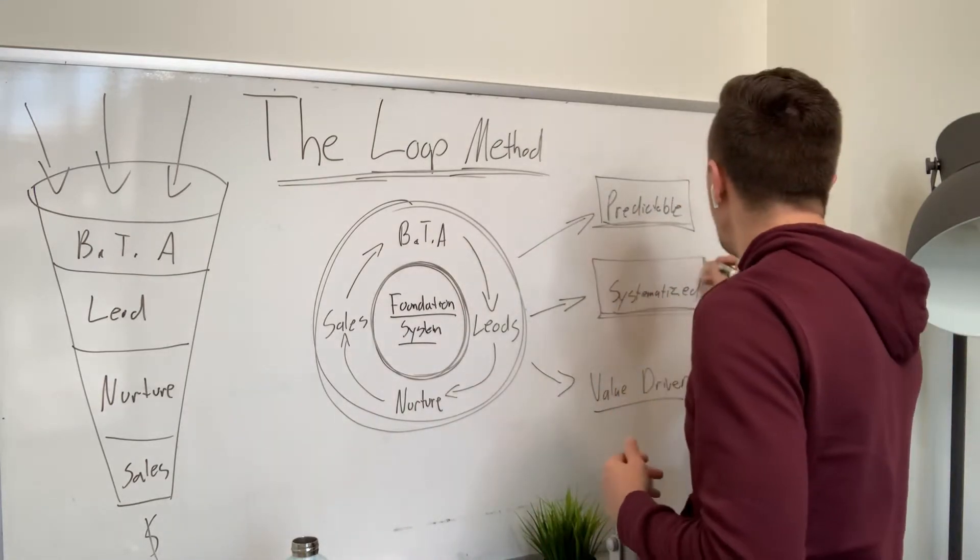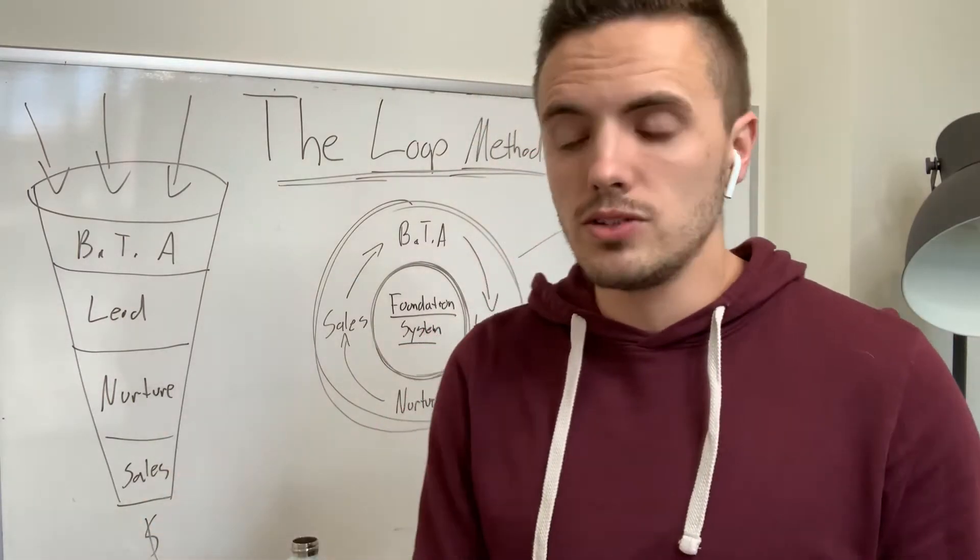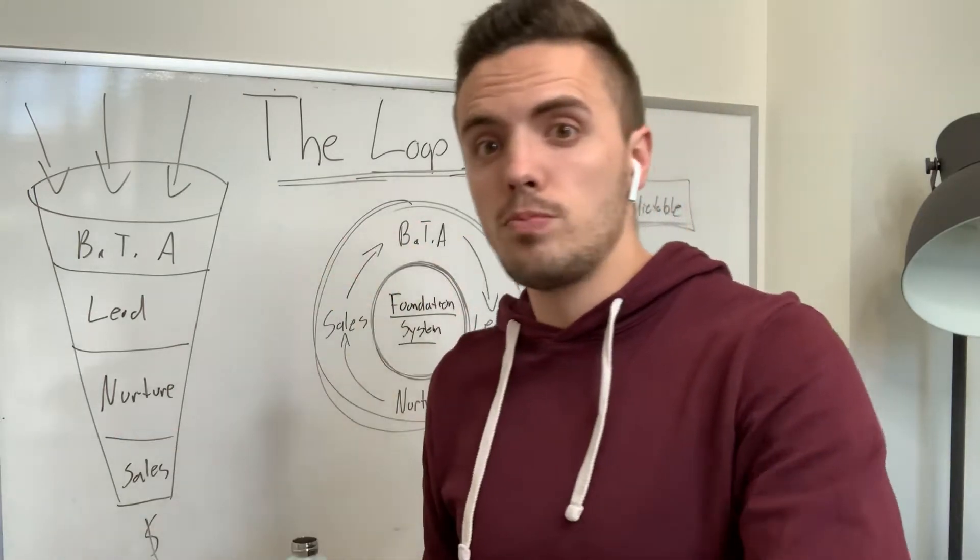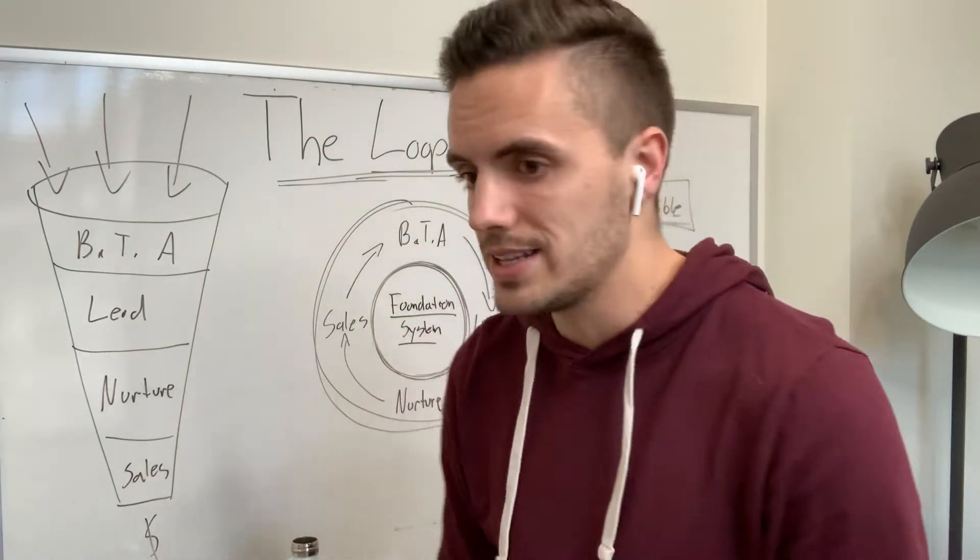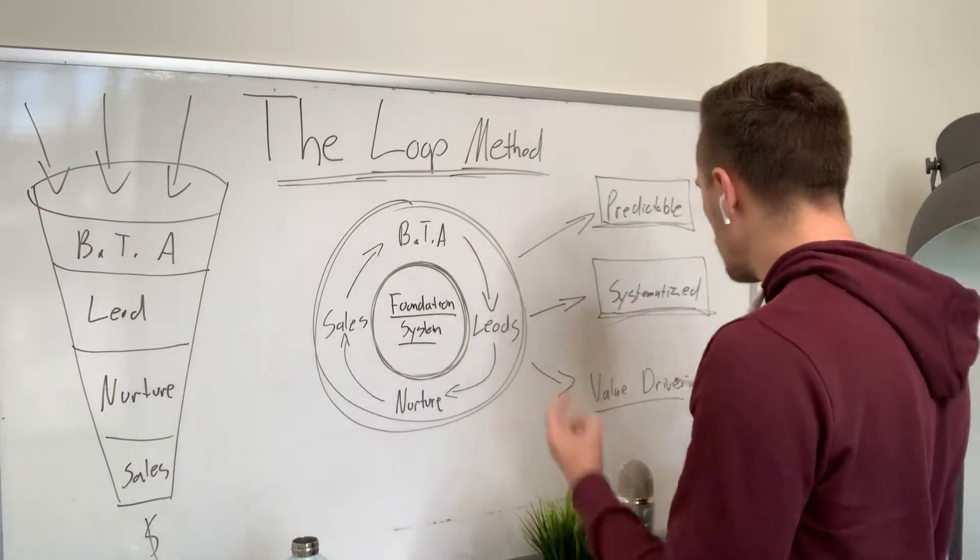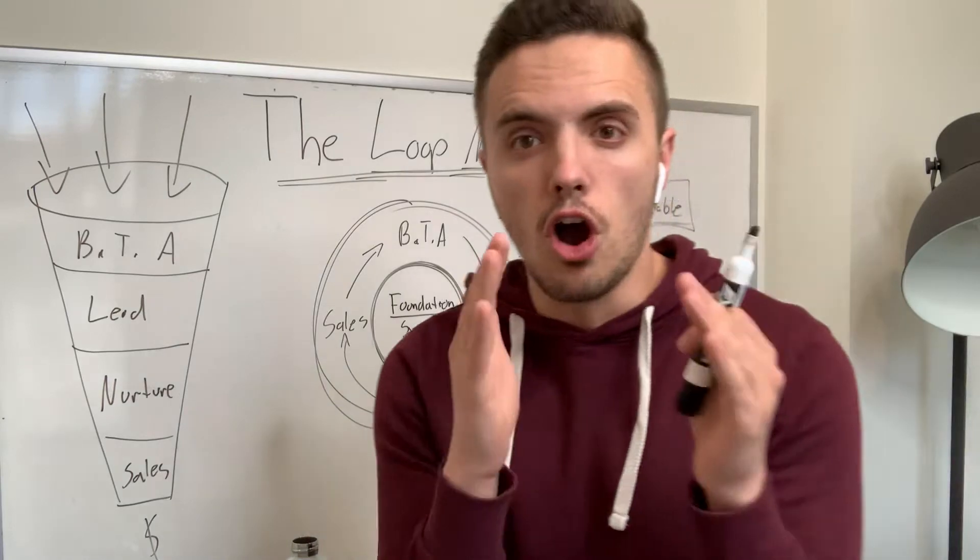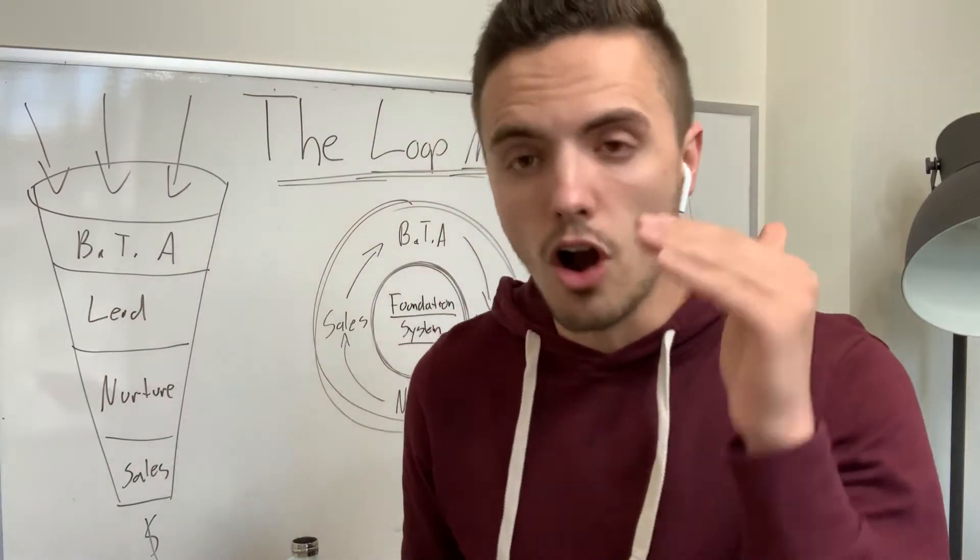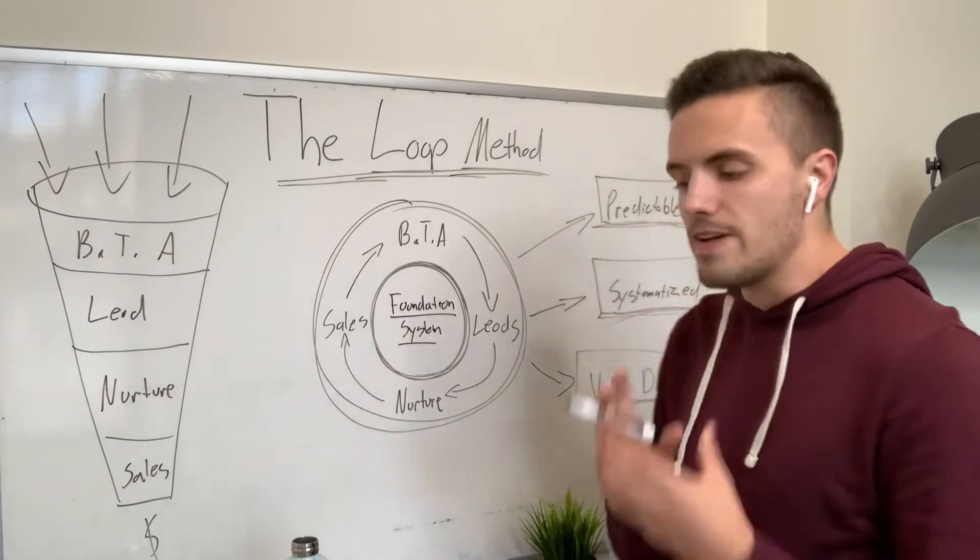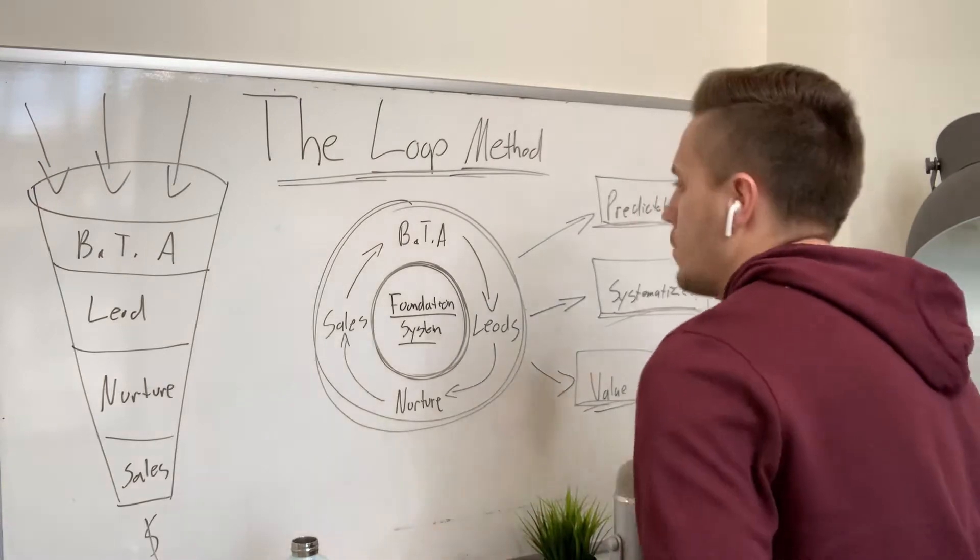The second thing is I knew that it needed to be a system that I could hand off to someone else that could be systematized. It could be broken down into simple steps that other people could take on so that we could delegate it. So that's the second thing I knew that it had to be systematized. The third thing I wanted it to be value driven because I believe in heart centered businesses. I believe in building heart centered million dollar businesses. And that needs to come from a place of providing value to people and of being in service. So that's why we created it.